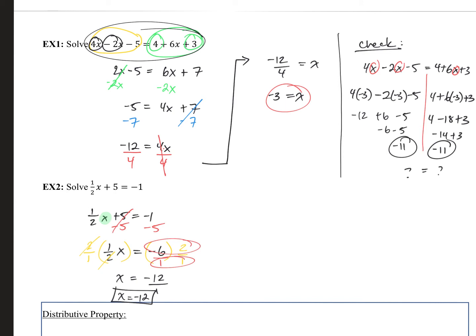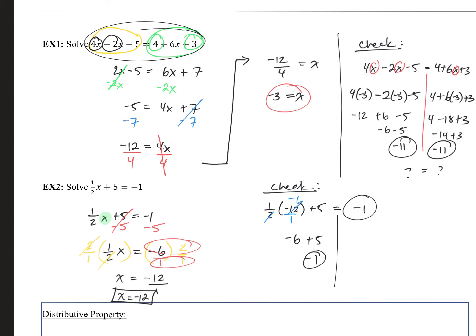Let's check: plug in negative 12 wherever we see x. The 2 and the 12 cancel to give negative 6, and negative 6 plus 5 equals negative 1. The two sides are equal, so yes, we solved it correctly.